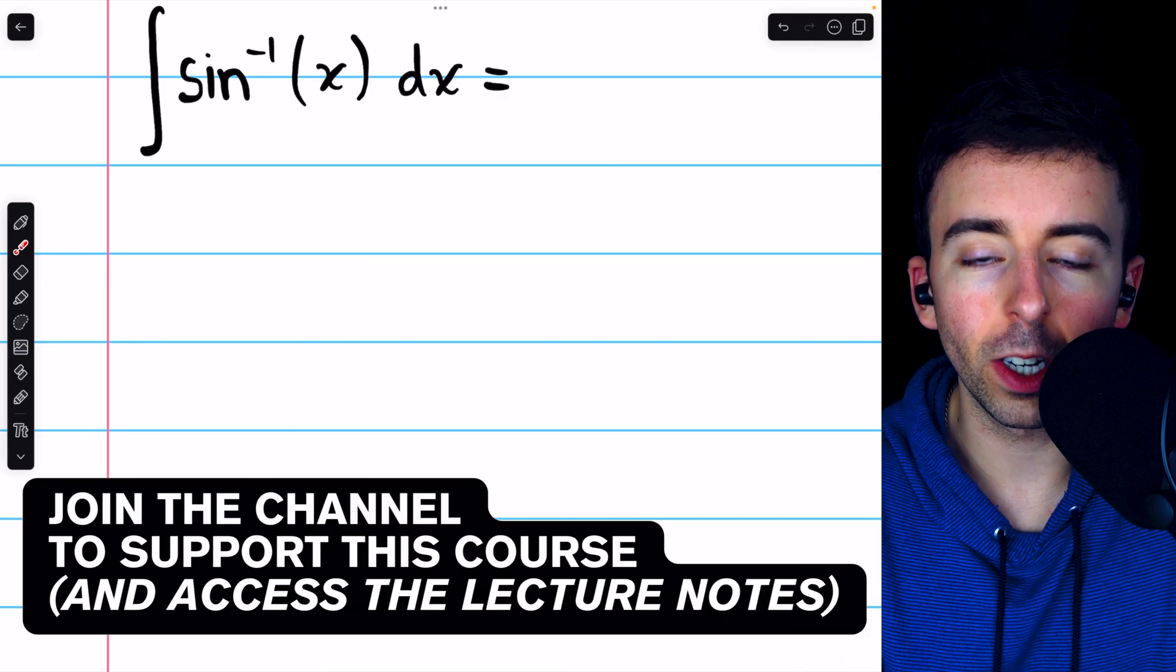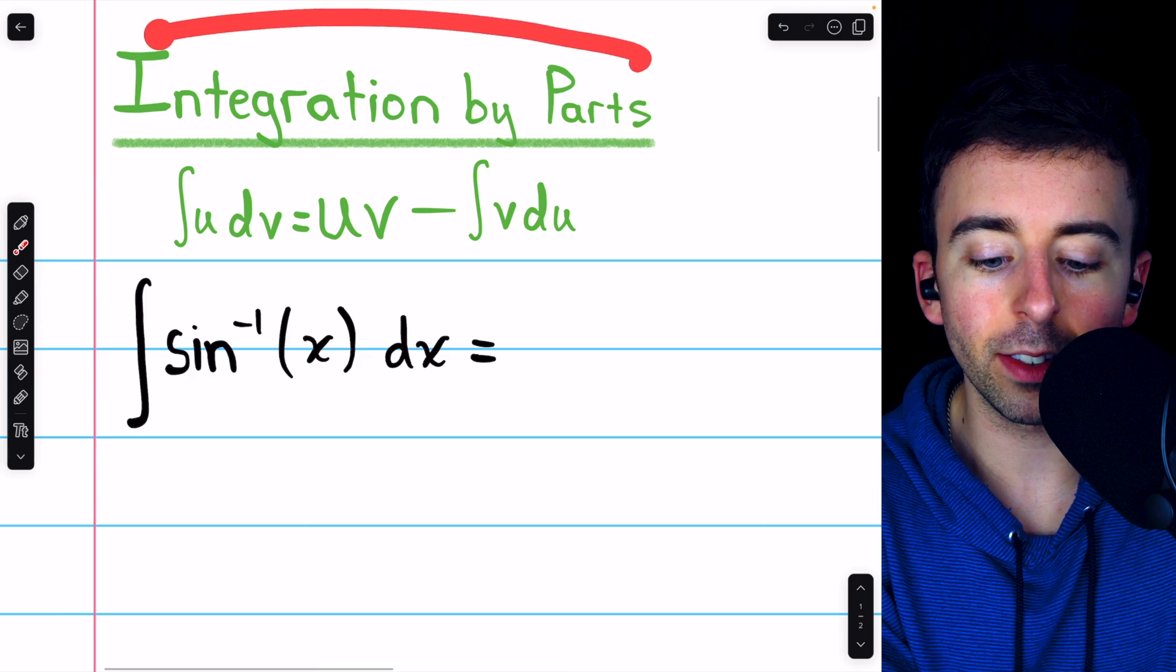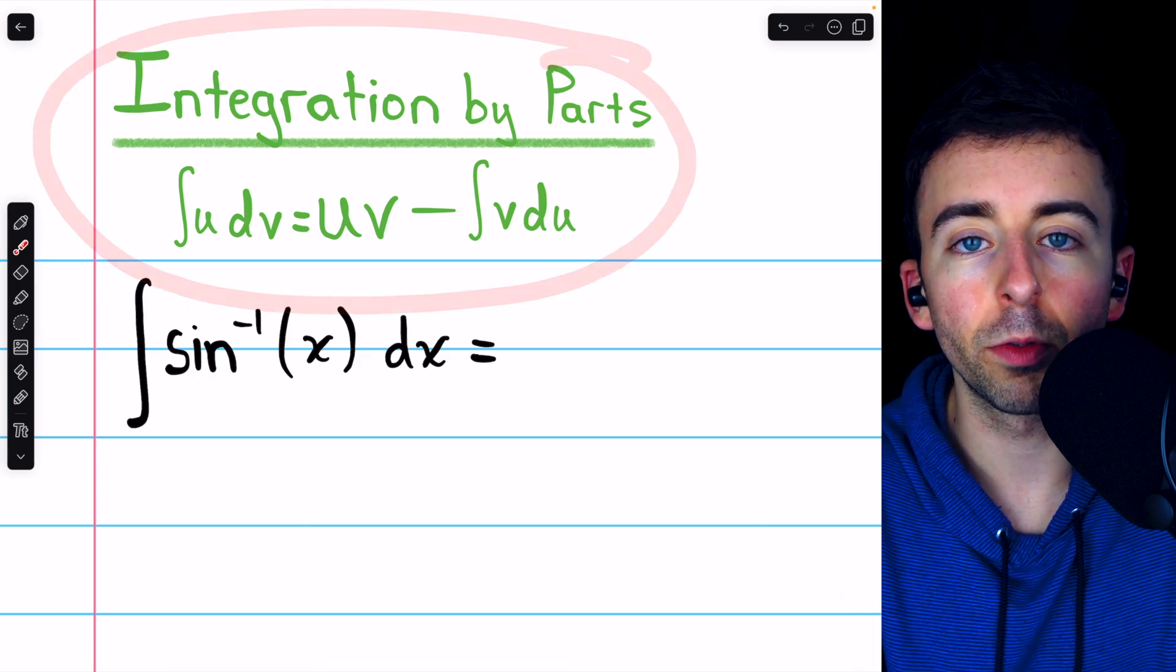To integrate the inverse sine function arc sine of x, we can actually use integration by parts, the formula for which I've put here for your reference.